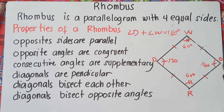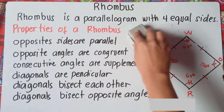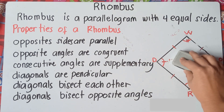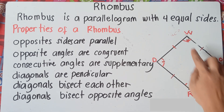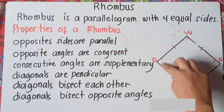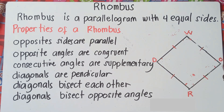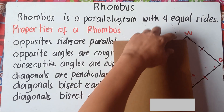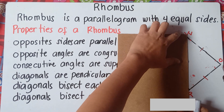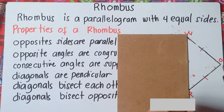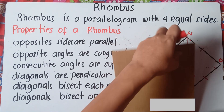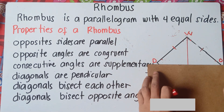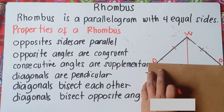Next, the fourth property: diagonals are perpendicular. So let's draw a diagonal. We connect the endpoint of W and R, and D and O — forming diagonal WR and diagonal DO in the rhombus WORD. The diagonals bisect each other and they form a 90-degree angle.